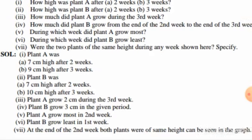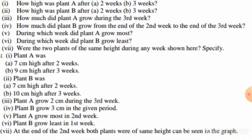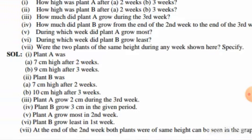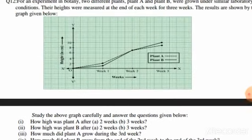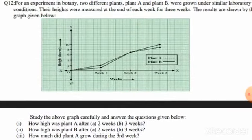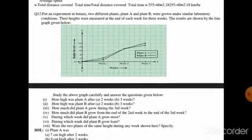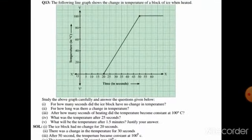In part (g), were the two plants of the same height during any week shown? At the end of two weeks, both plants were of the same height, as can be seen in the graph. From this graph we can find all these answers. Now moving on to question number 13.